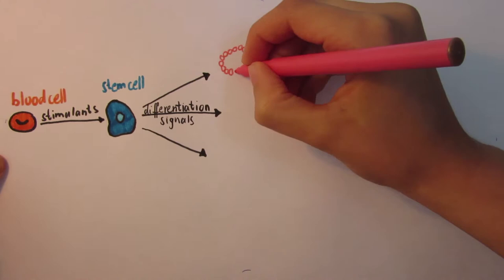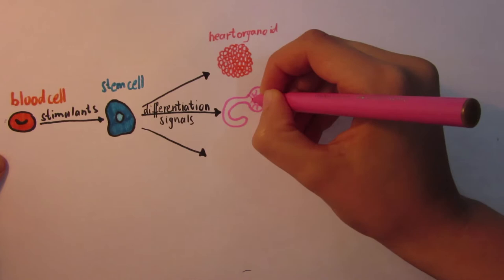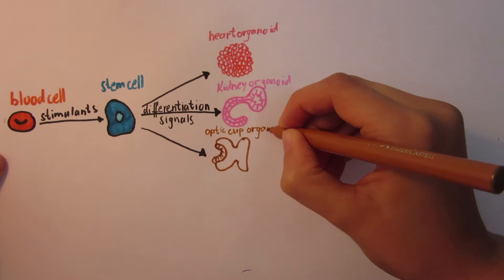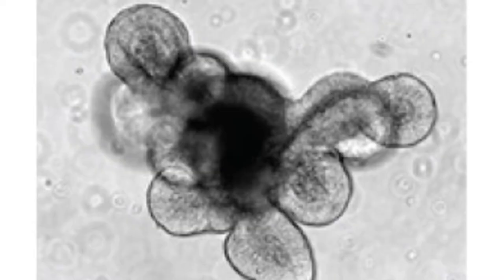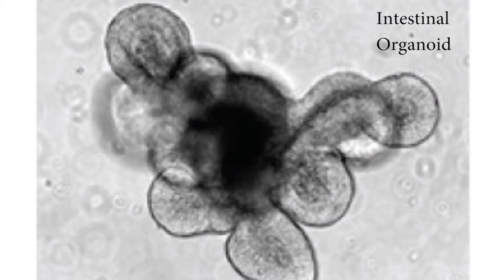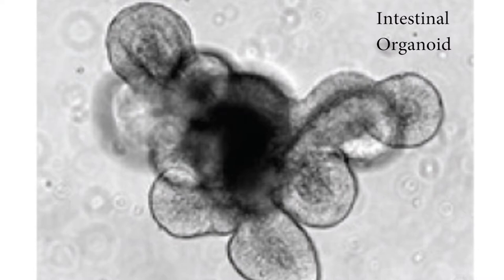Different types of organoids can be created, each representing a different organ. Here we see an intestinal organoid. If you look closely, you can see formations that resemble the crypts and the villi of a normal intestine. This is even clearer if you look at the schematic overview.